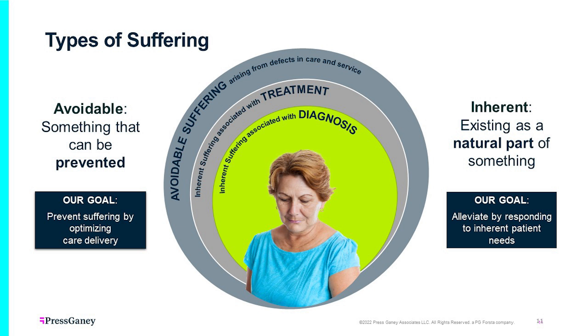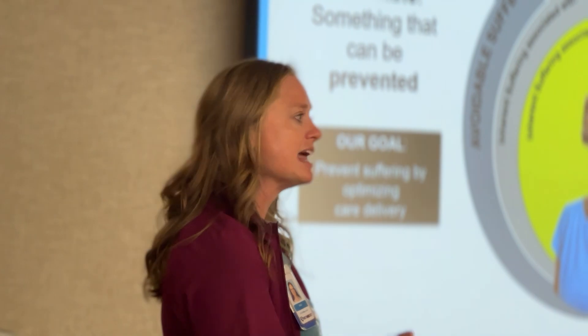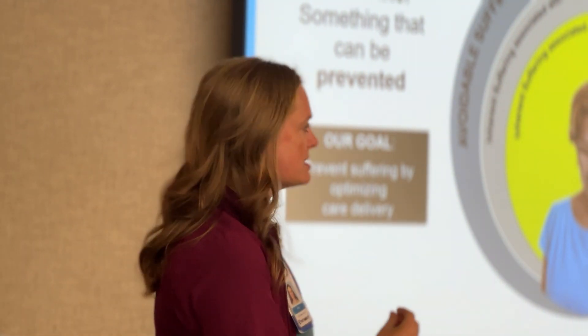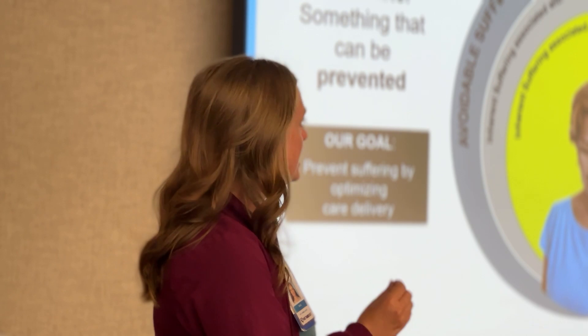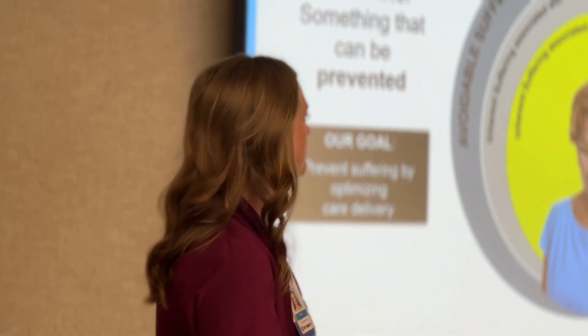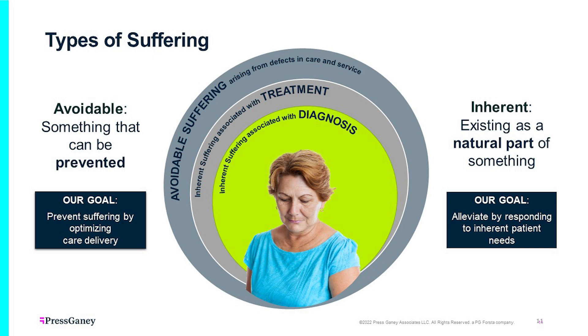We have two separate goals. For suffering that can be prevented, our goal is to prevent it by optimizing care delivery — answering the call light faster, being quieter in the hallway, knocking before we enter, asking if it's okay to enter — all of which decrease patient anxiety. For inherent suffering that exists as a natural part of the diagnosis, we try to alleviate it by responding to their specific symptoms or needs immediately, even if we can't necessarily avoid that type of suffering.